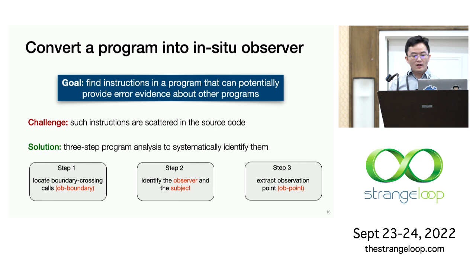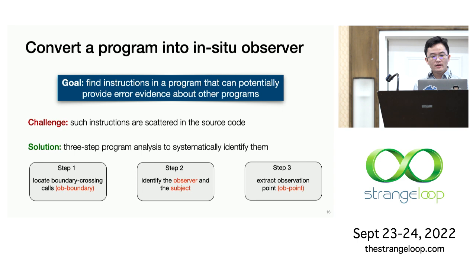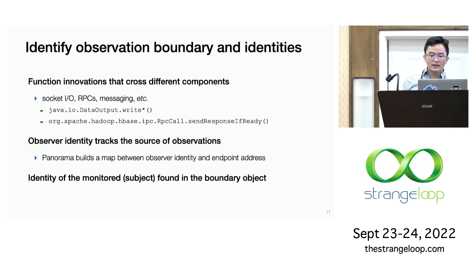For the offline stage, the goal is to find instructions in a program that can provide error evidence about other programs. Such instructions are typically scattered around a large source code base. We use a three-step program analysis to systematically identify such instructions. In the first step, we locate what code in a program crosses component boundaries. Then we extract the identifiers for the observer and the monitor subject. In the last step, we find what code in this program is influenced by this boundary-crossing code.